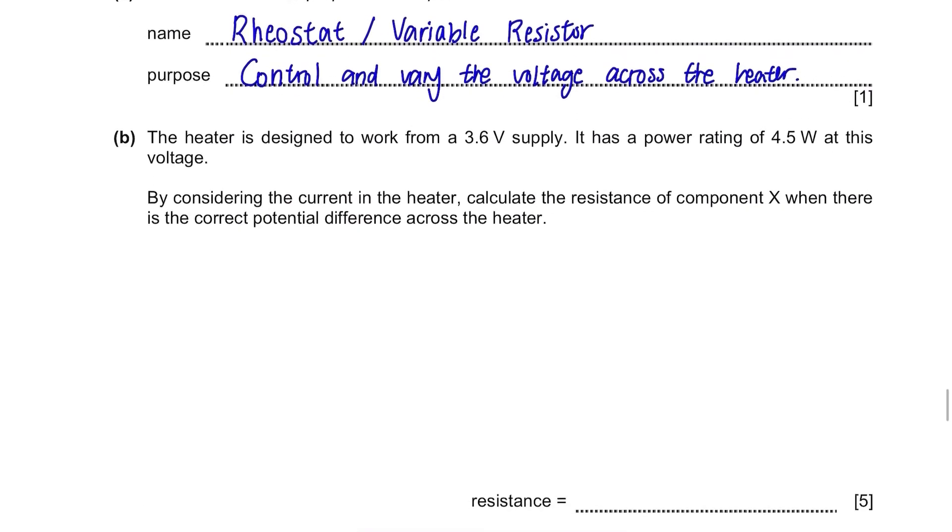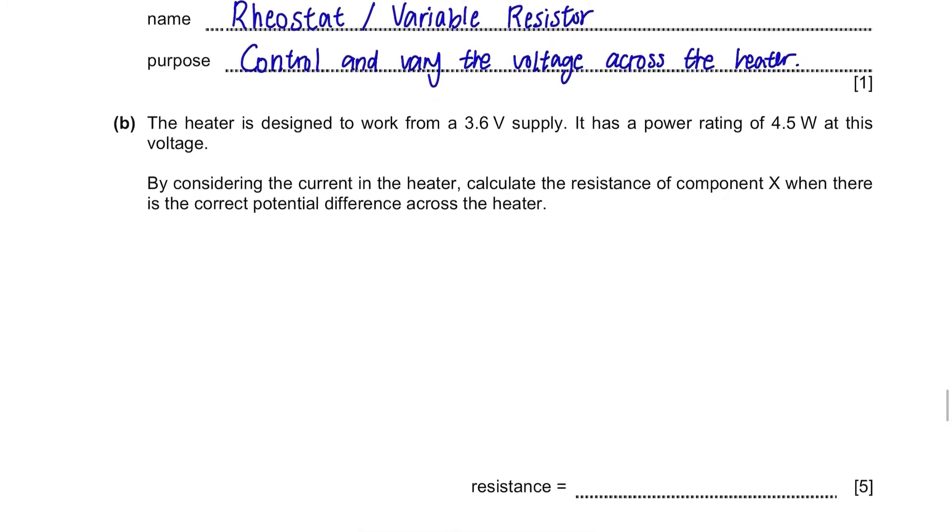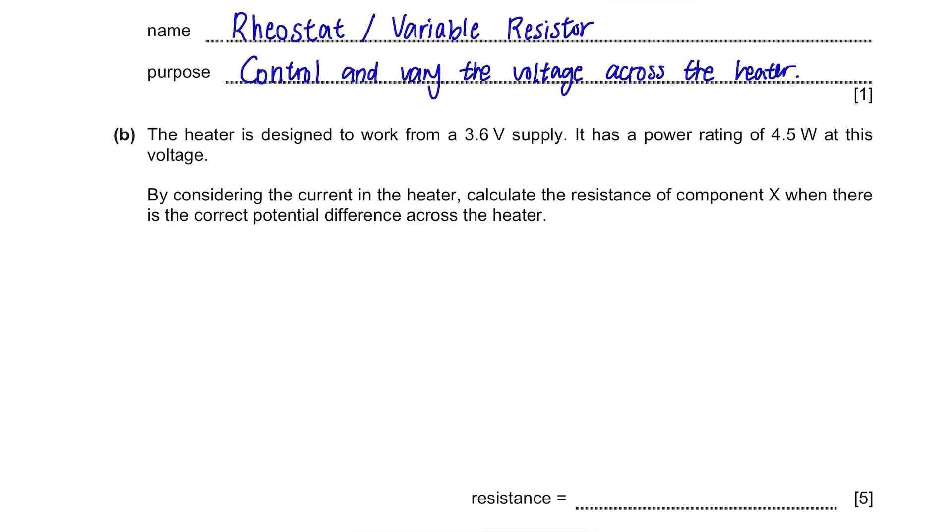Part B. The heater is designed to work from a 3.6V supply. It has a power rating of 4.5W at this voltage. By considering the current in the heater, calculate the resistance of component X when there is the correct potential difference across the heater. It sounds confusing, they are all in words, so let's label them on the diagram and break down the question one by one.